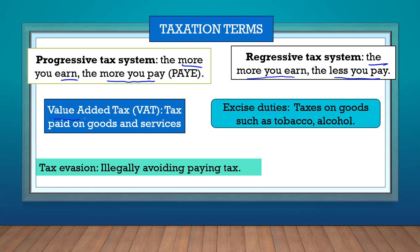Value-added tax, VAT, is basically tax on goods and services that we all pay. When you buy something at the shop, VAT is already included in most of those items. Excise duties are taxes on demerit goods — goods that are not good for society. The government charges taxes on those goods, such as tobacco or alcohol.